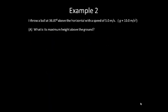Let's consider one more example. I throw a ball at 36.87 degrees above the horizontal with a speed of 5 meters per second. We will consider g to be 10. What is the maximum height above the ground?